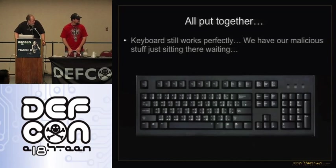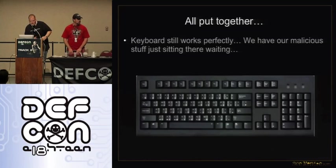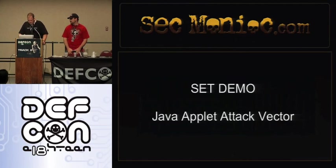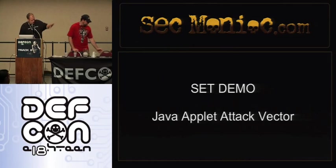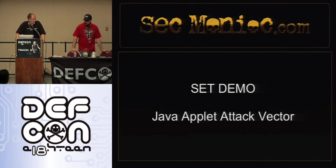This is what the keyboard looks like put back together — looks just like a keyboard. The chipset is tiny; you can fit it into pretty much anything. Iron Geek was able to fit a hub, SD card, Teensy, and LEDs into just a normal mouse. Kind of off topic, but I want to show the powerful stuff in SET — specifically the Java applet attack vector, which is the meat and potatoes of the Social Engineer Toolkit. If you want a 100% success rate on your pen test, I recommend this.